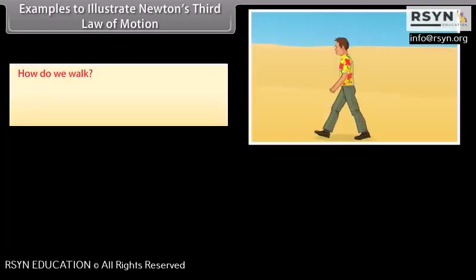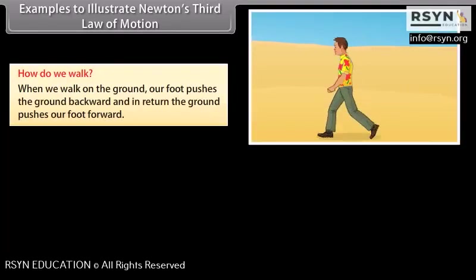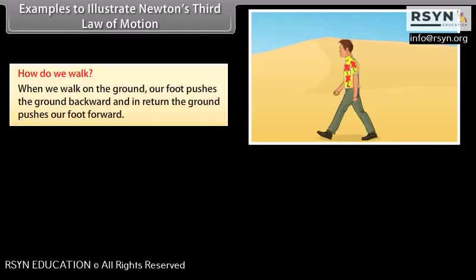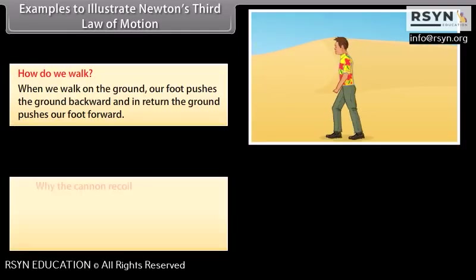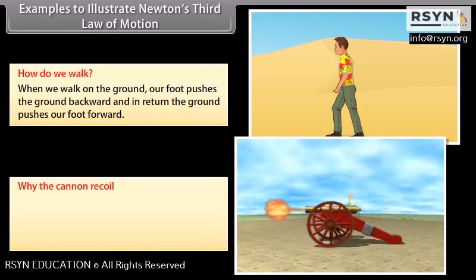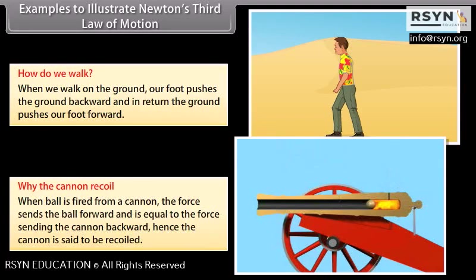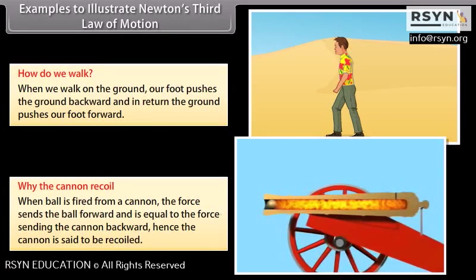Examples to illustrate Newton's third law of motion. How do we walk? When we walk on the ground, our foot pushes the ground backward, and in return the ground pushes our foot forward. Why the cannon recoil? When ball is fired from a cannon, the force sends the ball forward and is equal to the force sending the cannon backward. Hence the cannon is said to be recoiled.